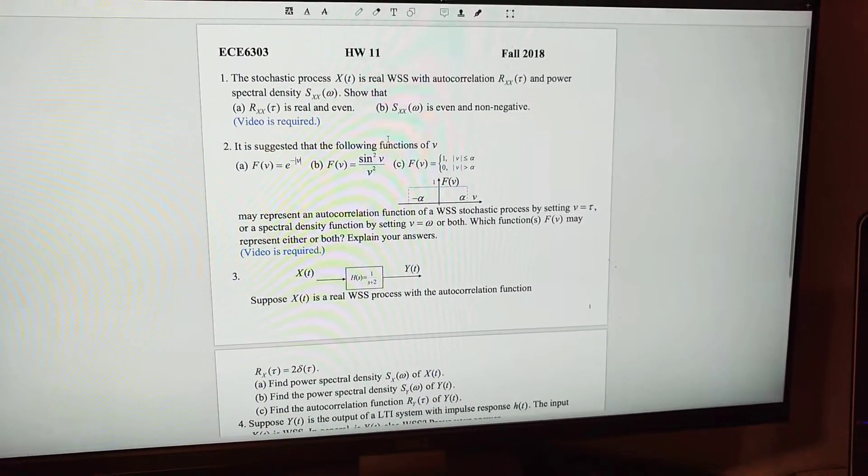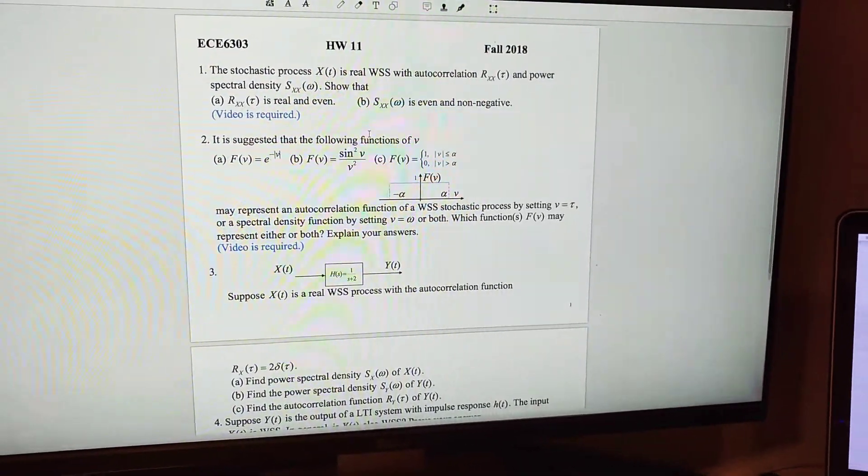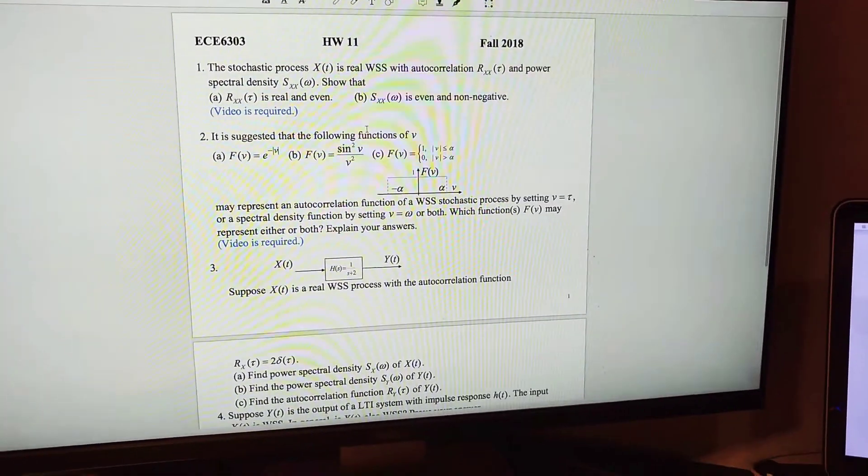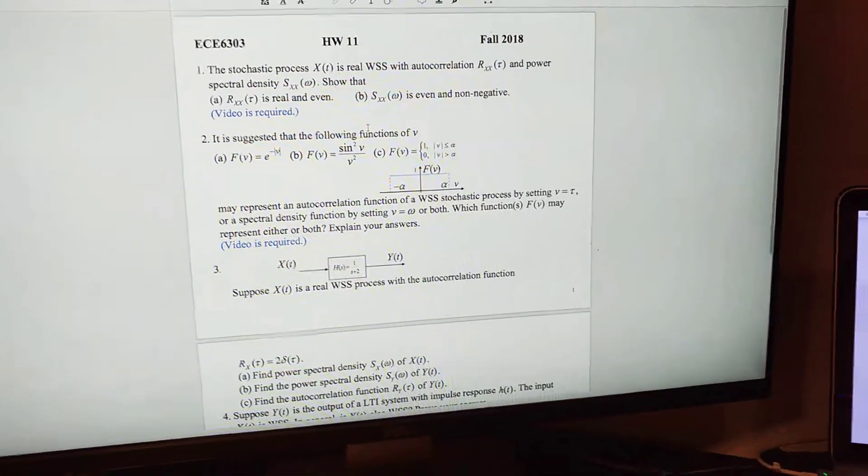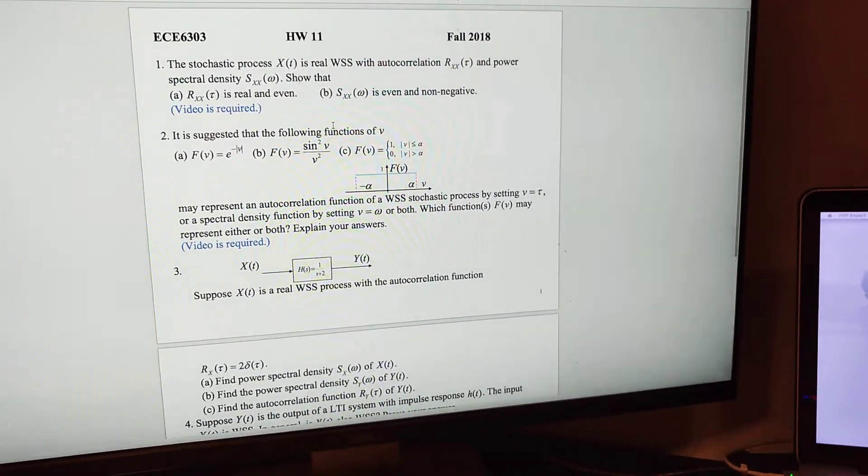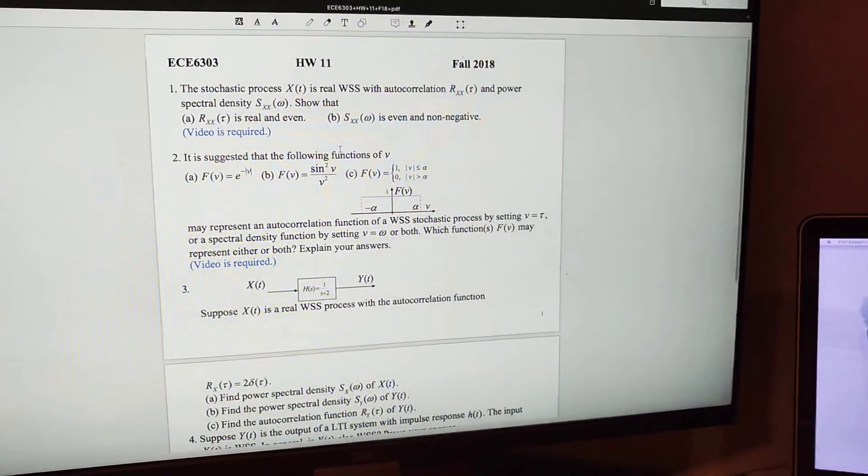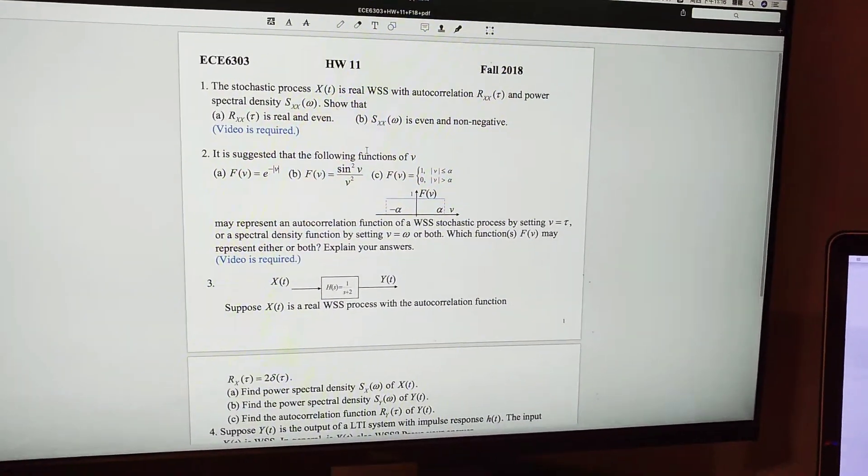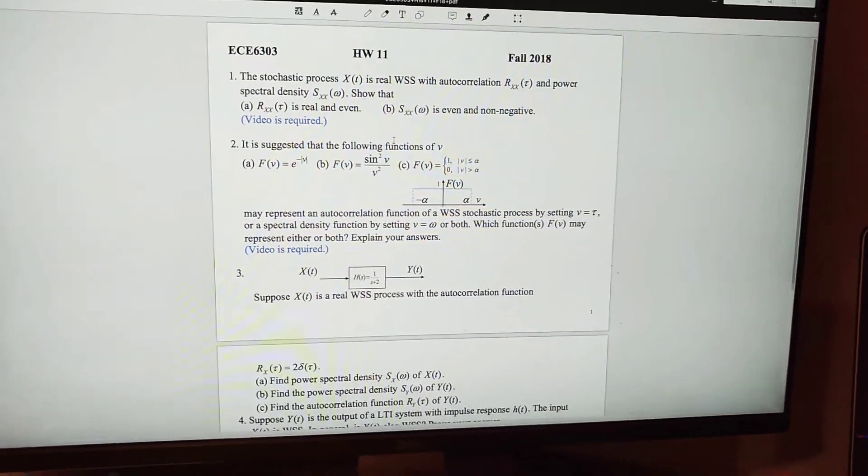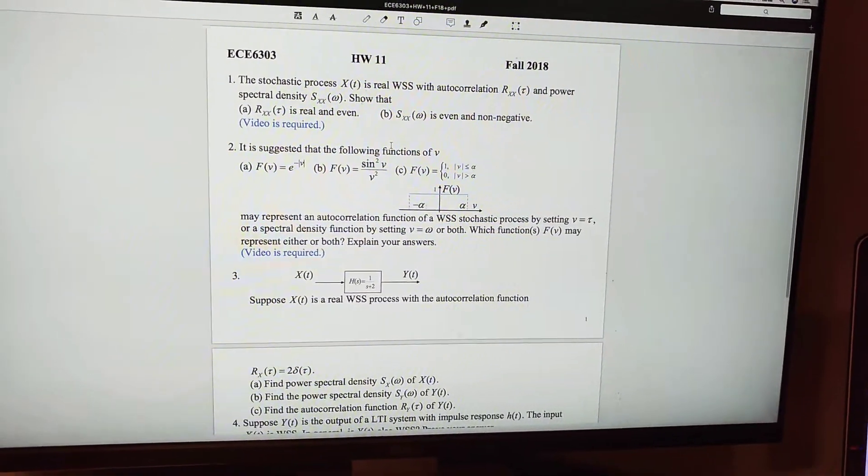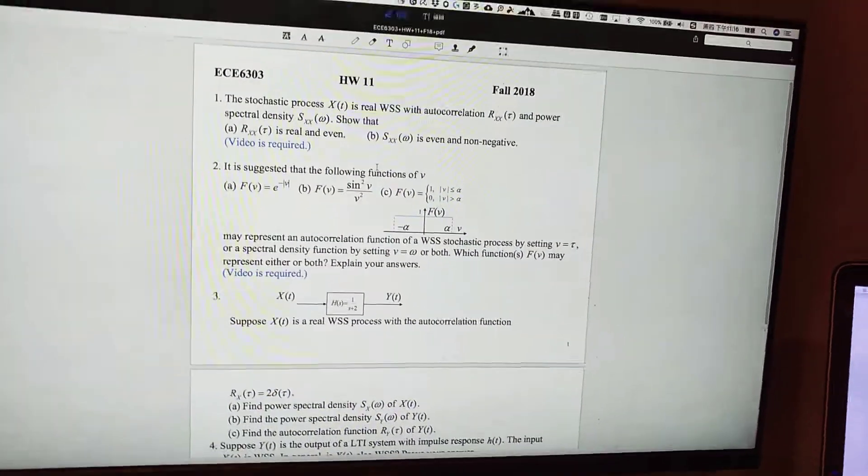The stochastic process Xt is real WSS with autocorrelation Rxx tau and power spectral density Sxx omega. Show that question A is Rxx tau is real and even.